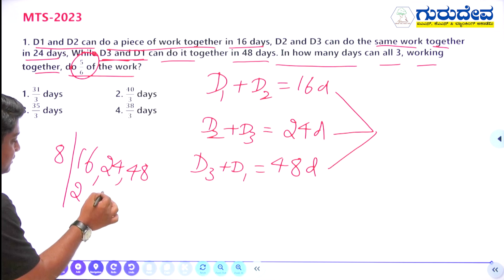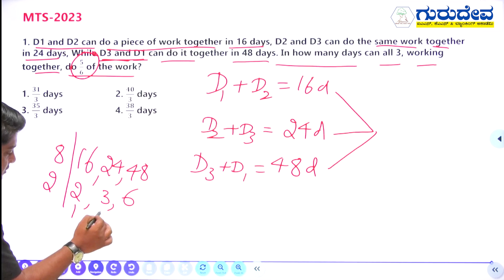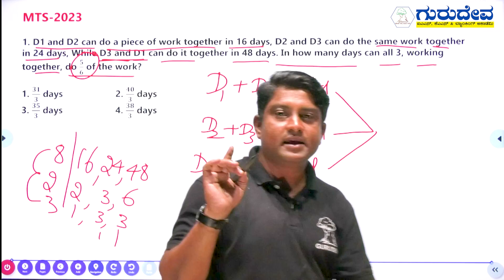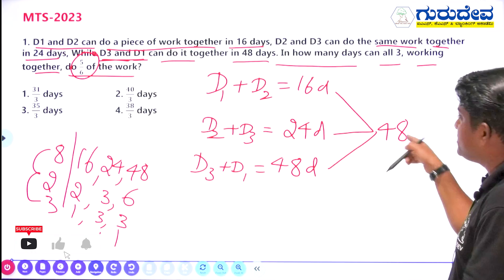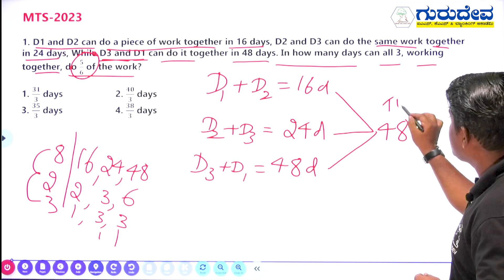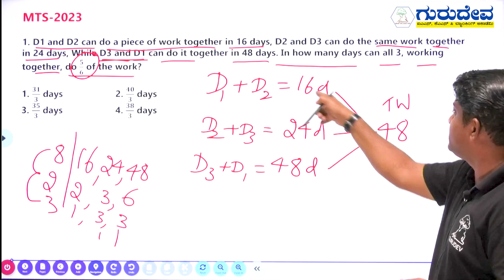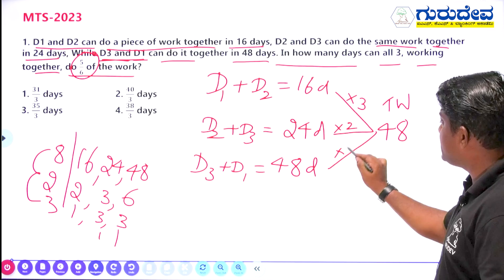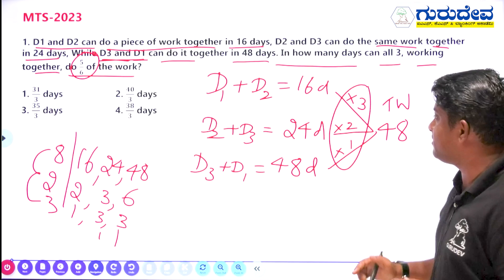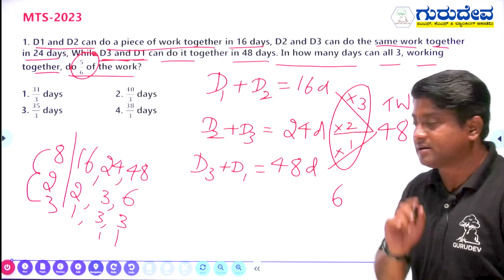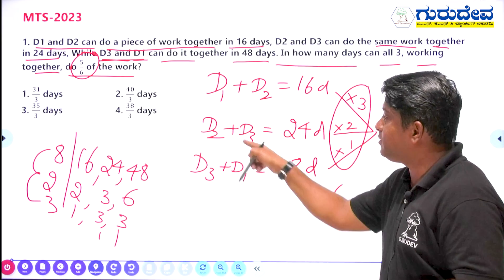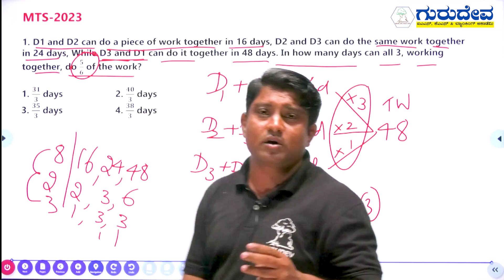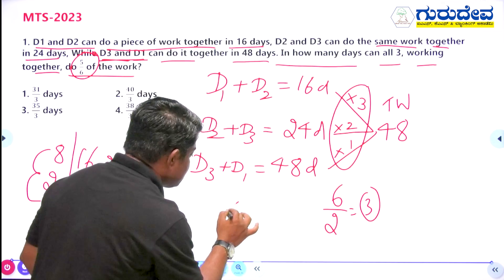Calculating the LCM of 16, 24, and 48: using the division method, LCM = 48, which we treat as total work. The efficiencies are 48÷16 = 3, 48÷24 = 2, and 48÷48 = 1. Their sum is 3+2+1 = 6. Since each of D1, D2, D3 appears twice, we divide by 2, giving combined efficiency = 3.